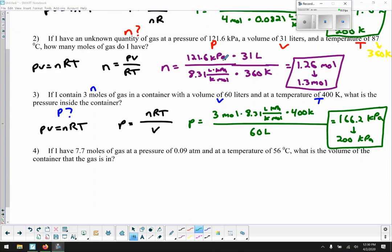So number four, if I have 7.7 moles of a gas, so that would be our N, at a pressure of 0.09 atmospheres, which is not a lot of pressure, that would be our P. And because it's atmospheres, we know what R value we'll be using, and a temperature of 56 degrees Celsius. We have degrees Celsius. The first thing I'm going to do, convert that to Kelvin. 56 plus 273 is 329 Kelvins. What is the volume of the container? So we're looking for volume. So again, we'll start with the ideal gas law, PV equals NRT. And this time we're rearranging for volume. So volume equals NRT over P.